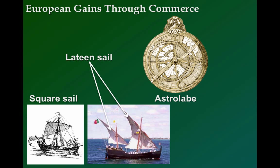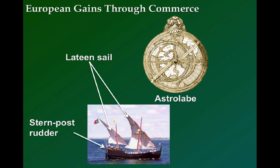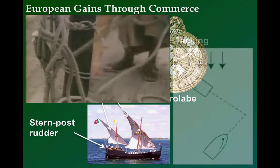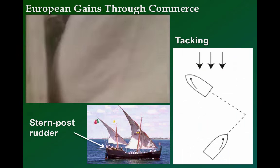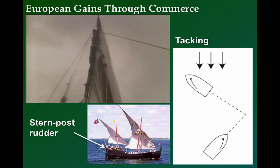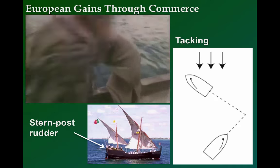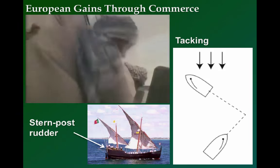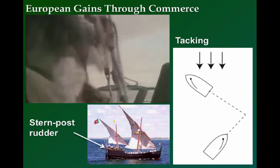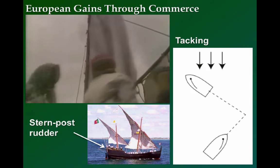Another invention that greatly helped the Europeans was the Chinese stern post rudder, originating around the 1st century CE and making its way into Europe around the time of the ancient Romans. The stern post rudder, along with the Latine sail, enabled ships to tack or sail into the wind, greatly improving navigation and safety across the open seas.